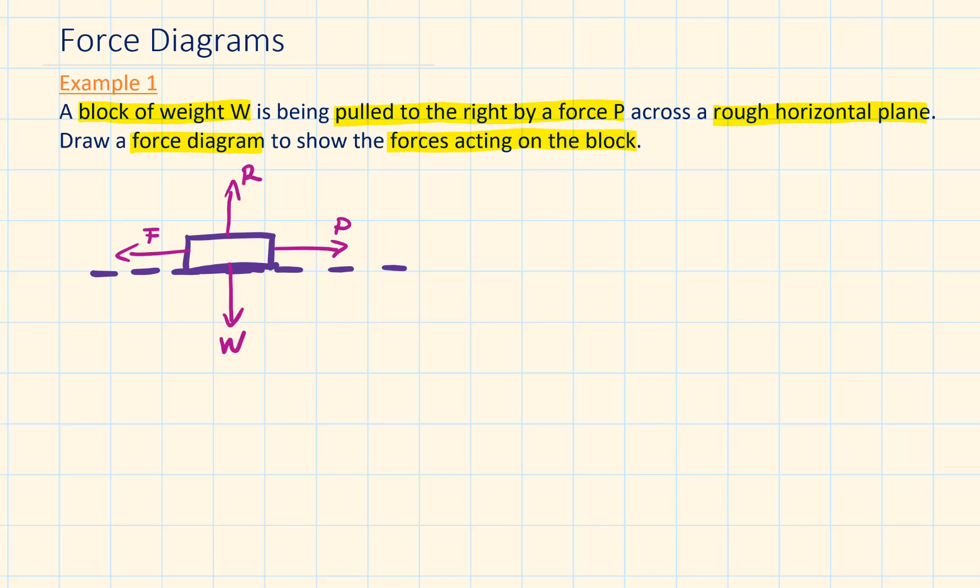We also have a force acting vertically upwards. We represent this with a capital R and this is the normal reaction of the rough horizontal plane on the block. If we would not have this, the particle would just keep falling downwards.